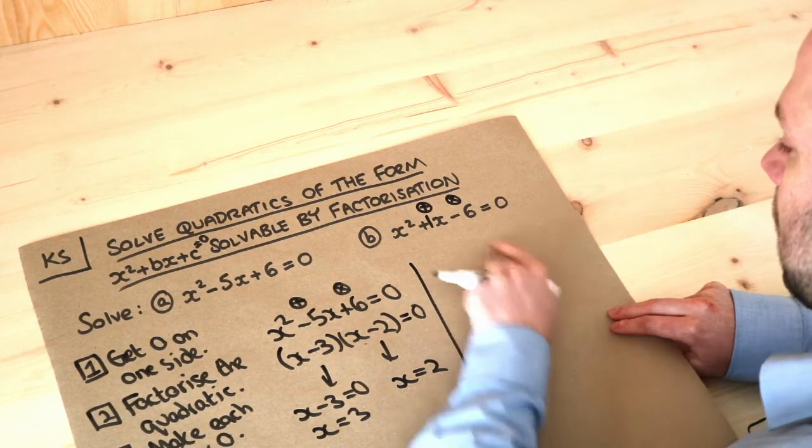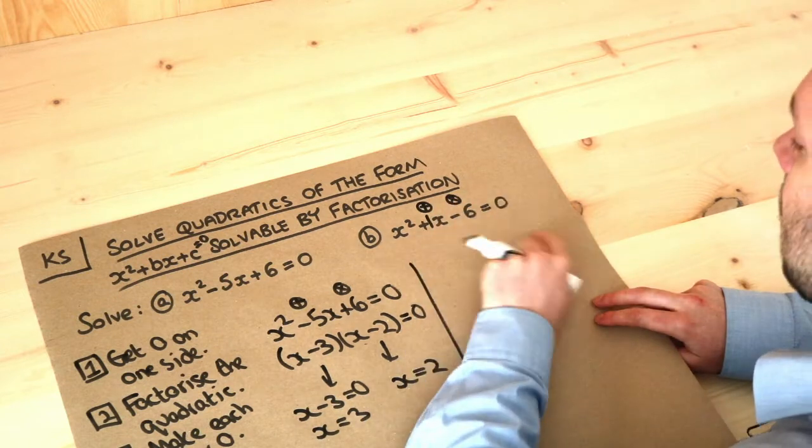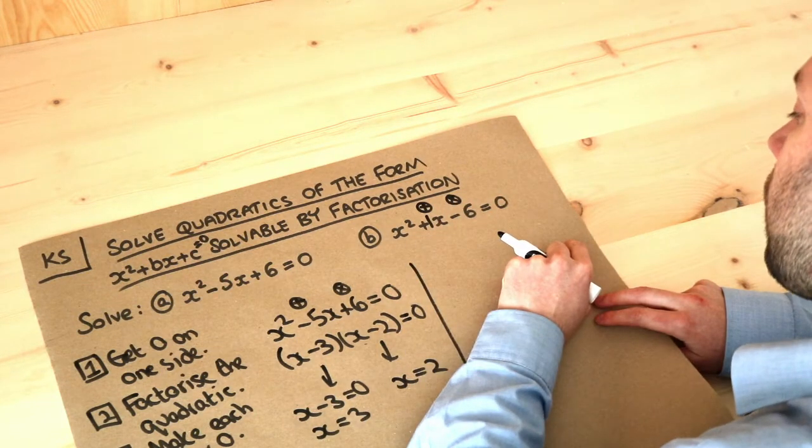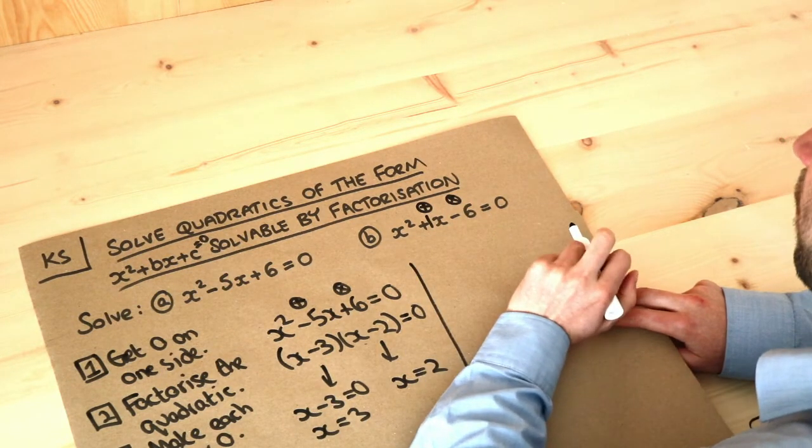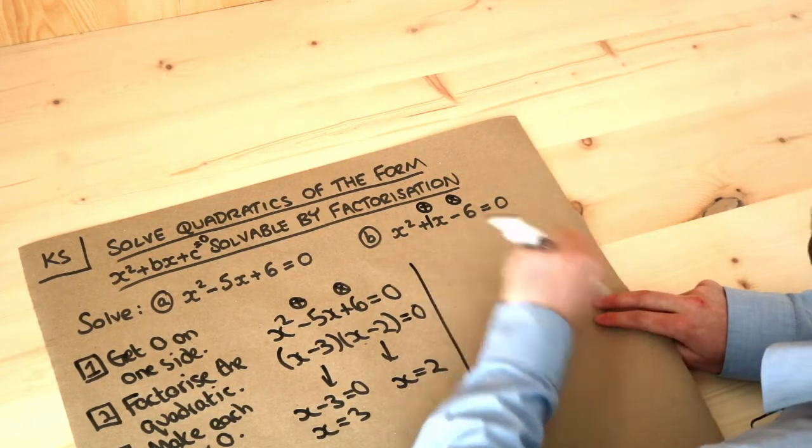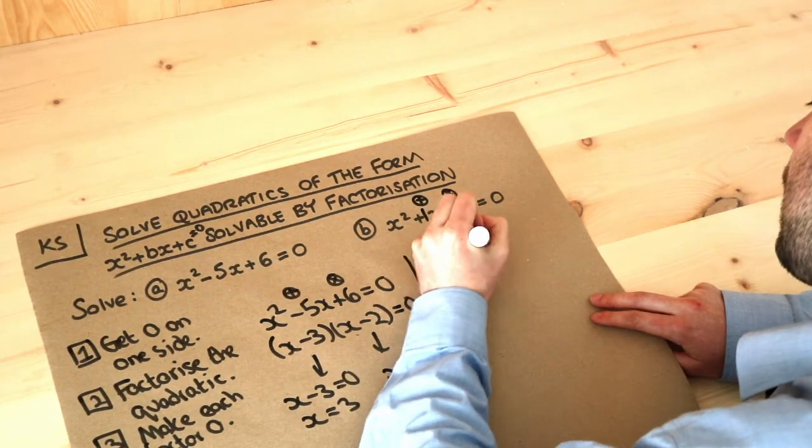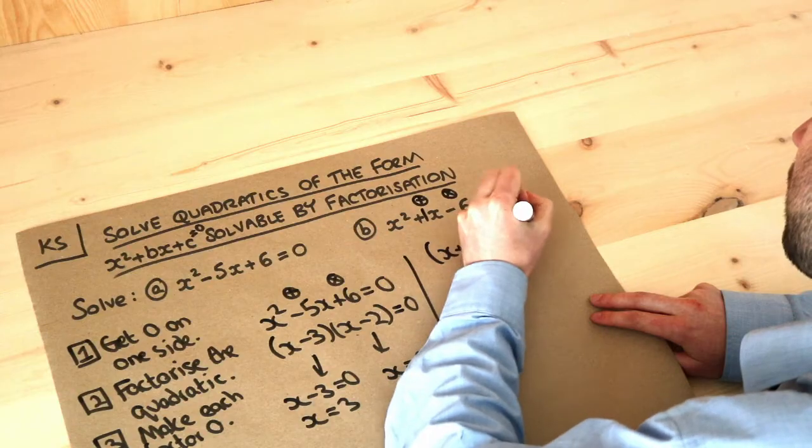Now what numbers multiply to give six? Well it could be three and two, but one's going to be negative so they times give a negative number. So it's going to be three and minus two, isn't it? Because three and minus two, they add to give one, they times to give minus six. We explore this in another video anyway. So this factorizes to x plus three and x minus two equals zero.